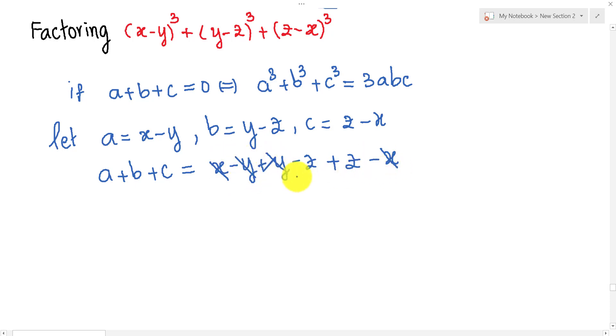So if a+b+c = 0, we get a³ + b³ + c³ = 3abc. Therefore (x-y)³ + (y-z)³ + (z-x)³ = 3(x-y)(y-z)(z-x). This is our solution.